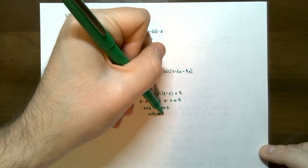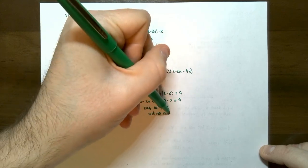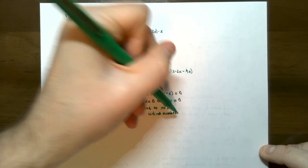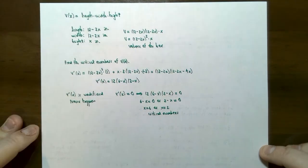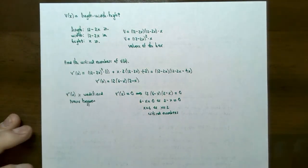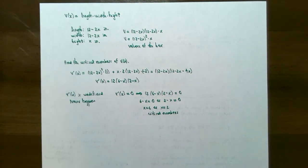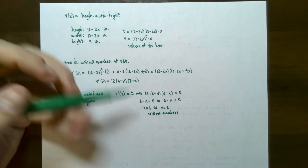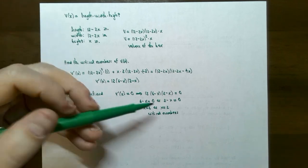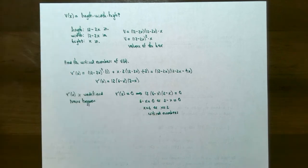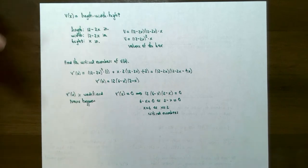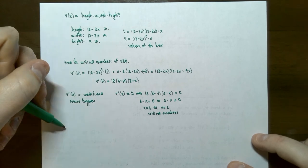So we have two critical numbers for V(x): x = 2 and x = 6. We can either use the first derivative test with a sign chart or calculate the second derivative. Let's use the second derivative test again.